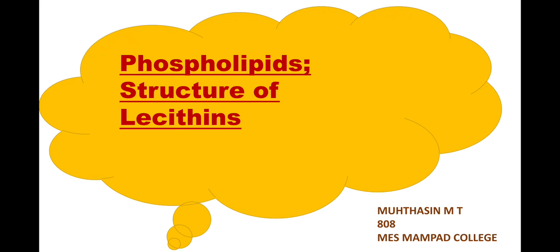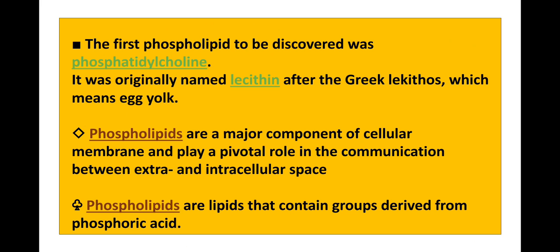Good morning everybody, it's me Mohdazin. Today we are going to discuss about phospholipid, structure of lecithin. The first phospholipid to be discovered was phosphatidylcholine; it was originally named lecithin after the Greek 'lecithos,' which means egg yolk.